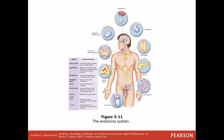Here are some of those structures and their locations: the hypothalamus, the pituitary gland — the master gland of the whole system — the pineal gland, the thymus, the thyroid just below the voice box, the pancreas just behind the stomach, the adrenals on top of the kidneys, and for females the ovaries and for males the testes.